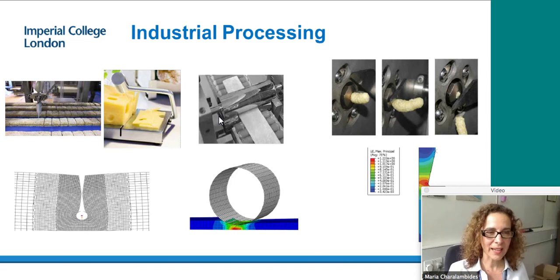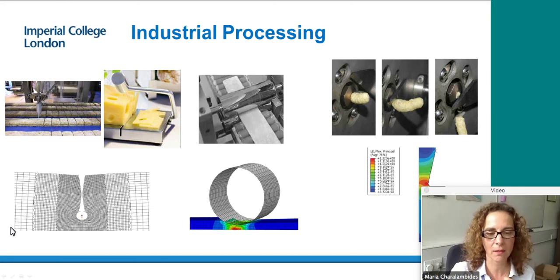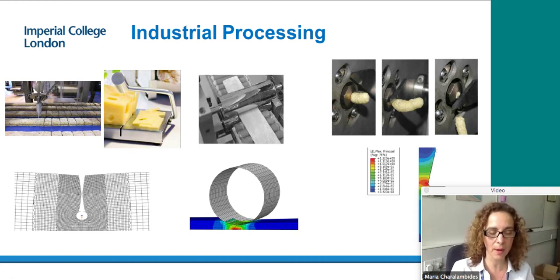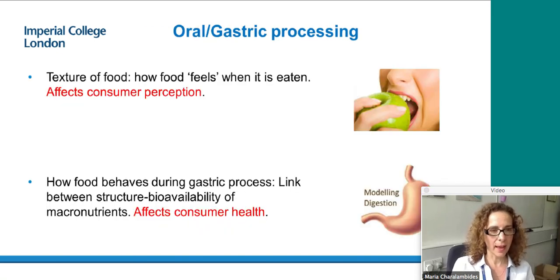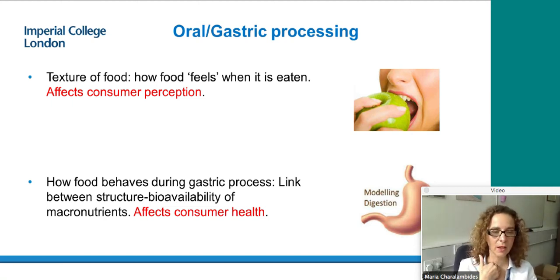We've used this method for modeling industrial food processes: here I have cutting of cheese by a wire, rolling of bread dough, and an extrusion process. All of these are models we developed to mimic the real process, so instead of expensive and inefficient pilot-scale trial-and-error studies, you can do the first stage virtually on the computer. For human processes — what happens when food gets eaten — this matters for consumer perception and for the gastric process, where we want to link food structure and breakdown to macronutrient availability and consumer health.